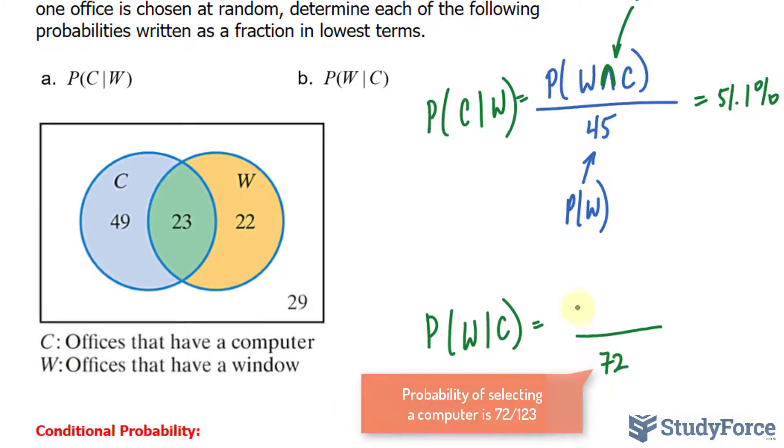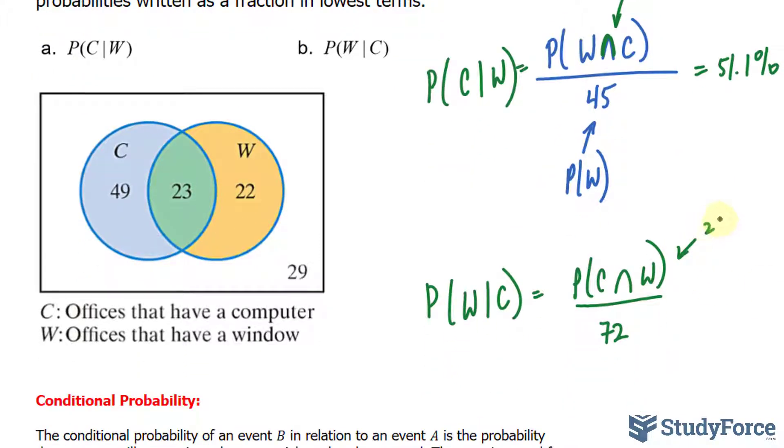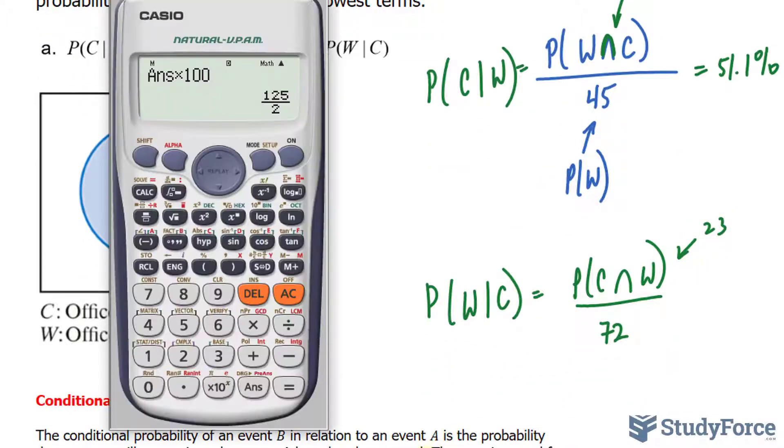At the top, we have the probability of C intersecting with W. Just as before, we have the same expression. We'll write down 23 at the top, and we take 23 divided by 72,